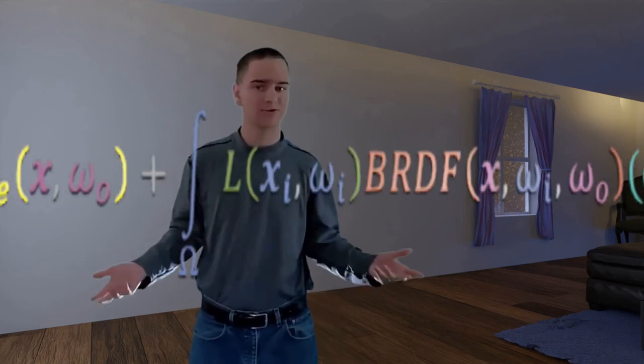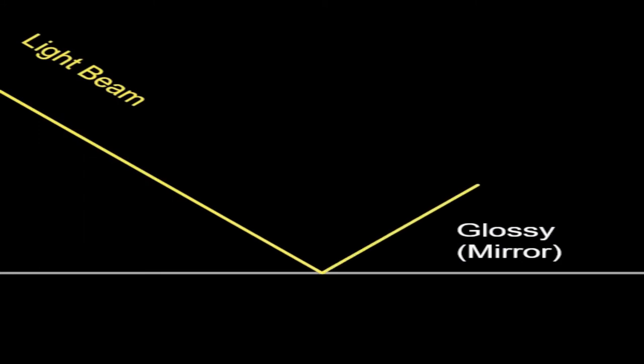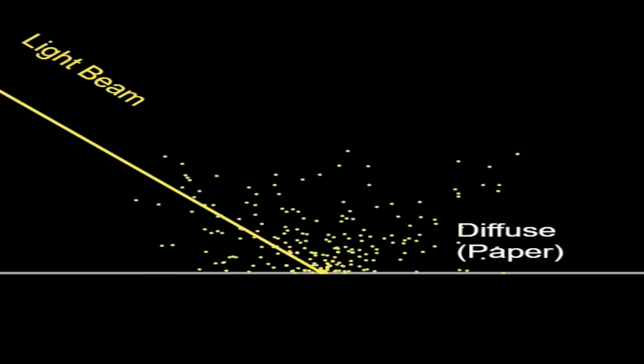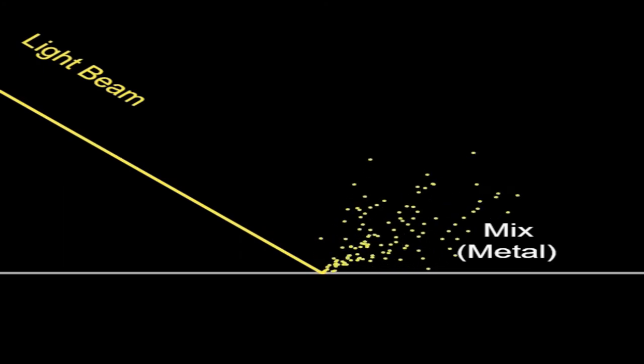The BRDF is where most of the magic happens. Different surfaces reflect light differently. Some reflect light in only one particular direction, and some evenly in every direction. Some are a mix of the two. The BRDF accounts for this to determine what percent of light shining onto the point gets reflected back to the camera. Thus, while the rest of the rendering equation describes how light interacts with the scene, the BRDF takes a scene like this and turns it into a scene like this.